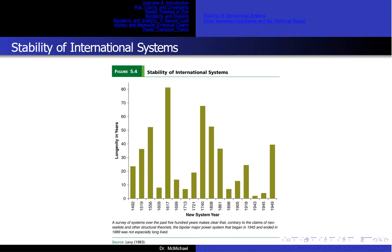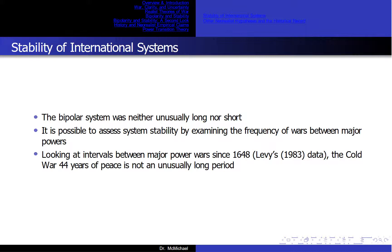It is also possible to look at the duration of time periods in which the number of major powers remained unchanged, as shown in Figure 5.4. The highest longevity periods occur around 1617, then 1740, and then tied between 1556 and 1808. The first bipolar system was neither unusually long nor short. It is possible to assess system stability by examining the frequency of wars between major powers. Excluding proxy wars like the Korean War where the United States and China fought, there were no major wars during the Cold War. However, looking at intervals between major power wars from 1648 to the Cold War, 44 years of peace is not an unusually long period.